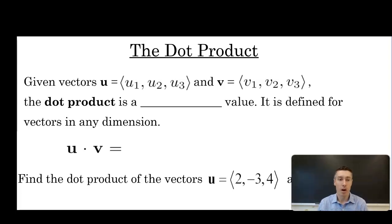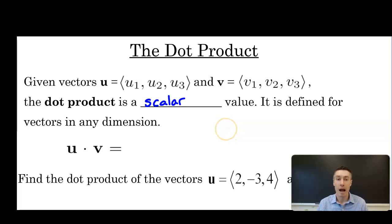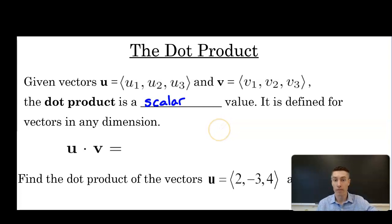To start defining the dot product, given vectors u = (u1, u2, u3) and v = (v1, v2, v3), the dot product is a scalar value. That means the dot product gives us a numeric output, not a vector output, and that's really important. It is defined for vectors in any dimension — we'll define it with vectors in three dimensions, but it could be easily translated for vectors in two dimensions, four dimensions, or any higher dimensions beyond that.